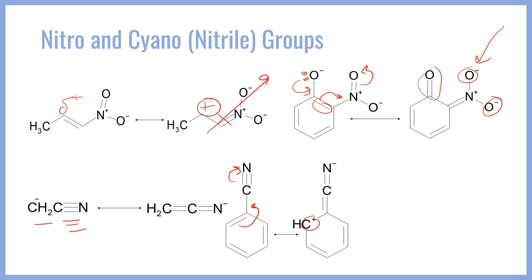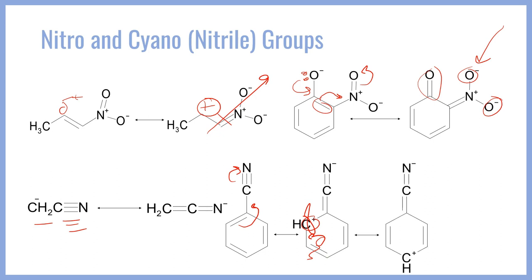Like any electron withdrawing group, this is going to create partial positive character. In this case, we're going to place a formal positive charge onto this carbon here. Because this carbon now has an empty p orbital, this pi bond can go ahead and interact and move its electron density onto that carbon, breaking this pi bond and giving an empty p orbital at that carbon.